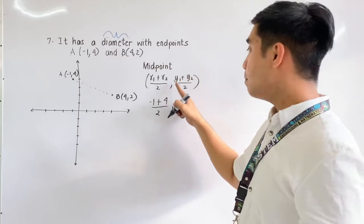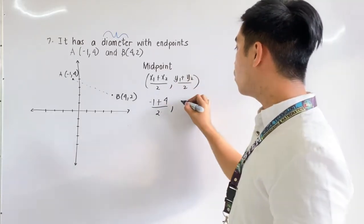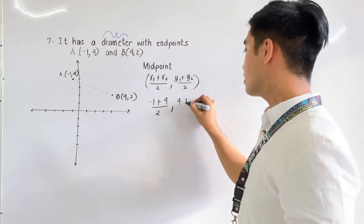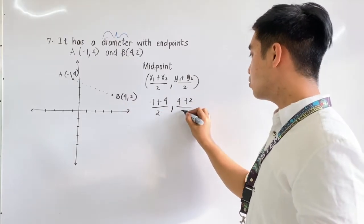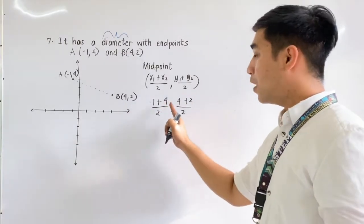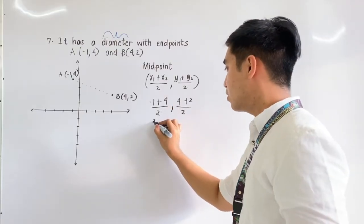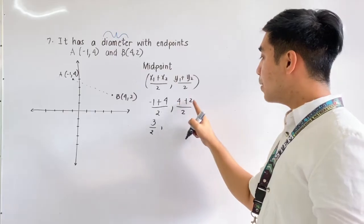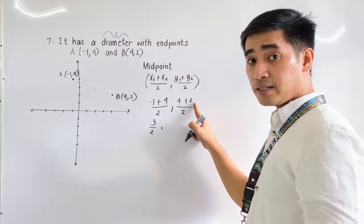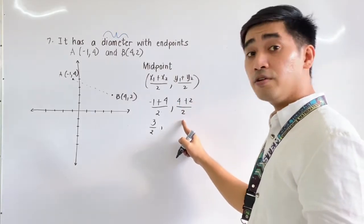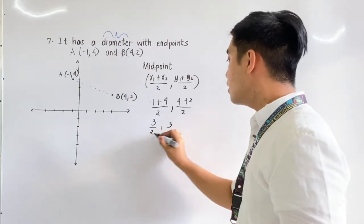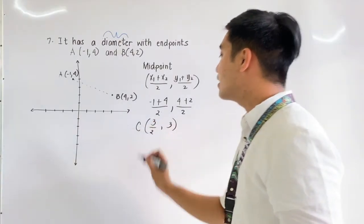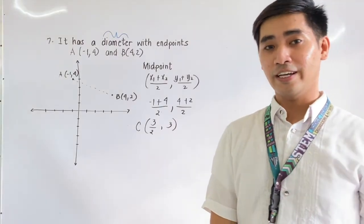And y1 plus y2 over 2: our y1 is 4 and our y2 is 2, so that is 4 plus 2 over 2. Negative 1 plus 4 is equal to 3 over 2, and 4 plus 2 is equal to 6, divided by 2 is equal to 3. Therefore, 3 halves and 3 is the center of our circle.